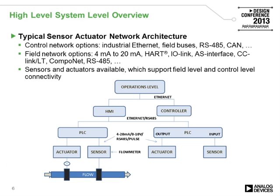So a high-level system-level overview: we have a sensor connected to our PLC, and our PLC will also be connected to an actuator. In this diagram, we're controlling the flow based on the flow sensor measurement. In terms of communications protocol between the PLC and sensor/actuator, often 4 to 20 milliamp loops, could be a 0 to 10 volt connection, or else some sort of fieldbus RS485 type protocol. Then from the PLC back to the controller, we might have some Ethernet or else a fieldbus protocol. From the controller back to the operations level, it's almost exclusively Ethernet.